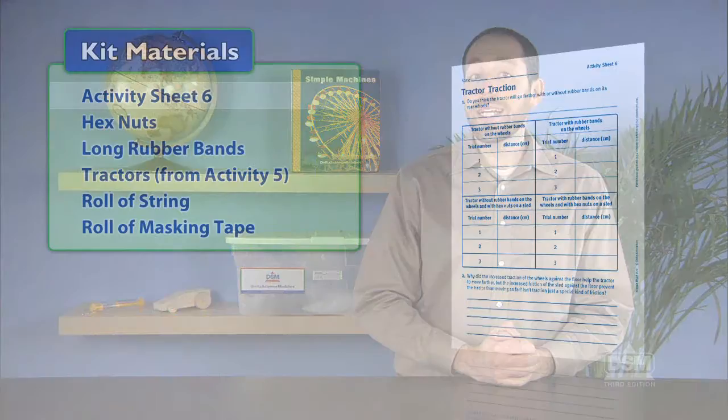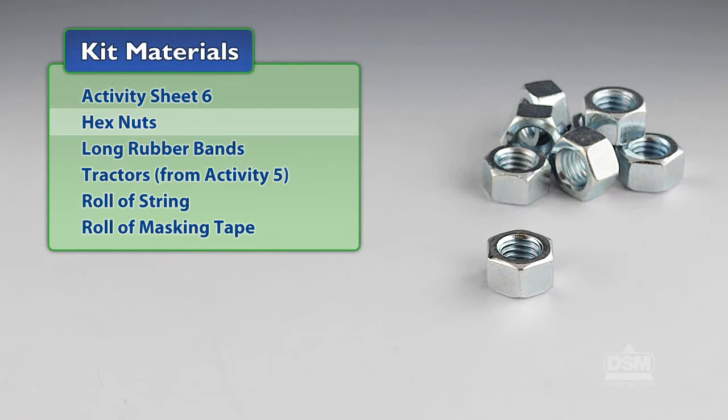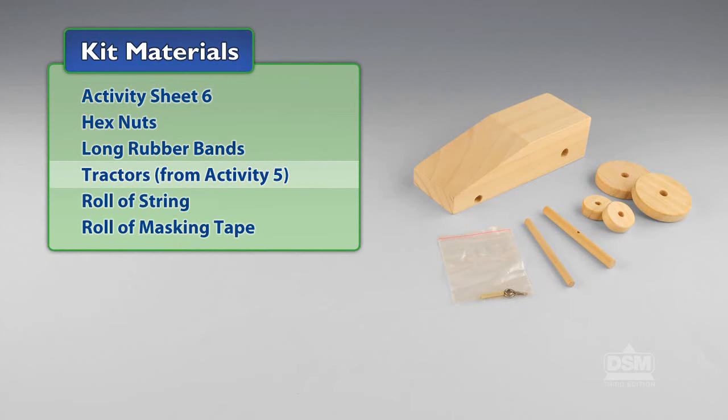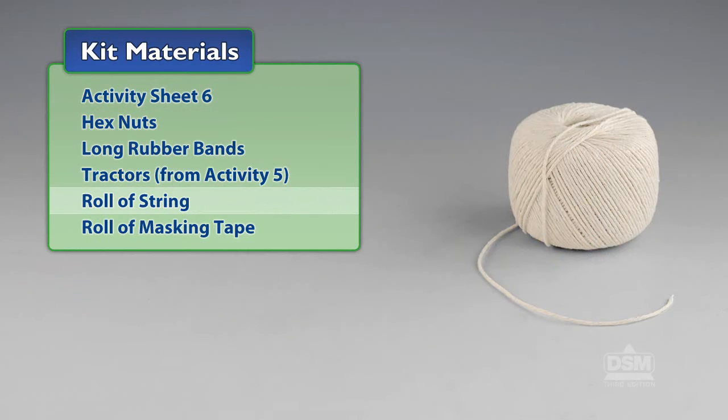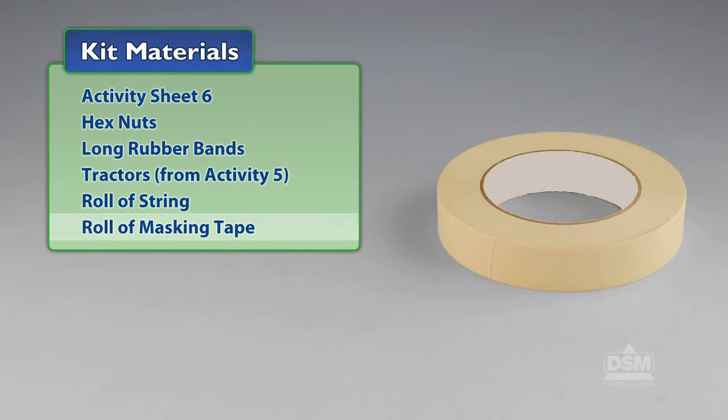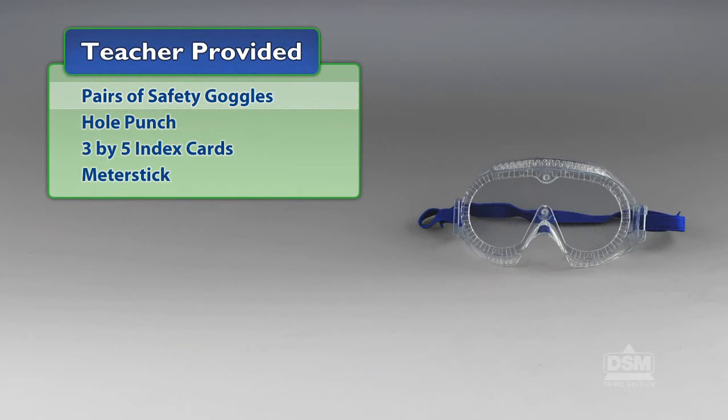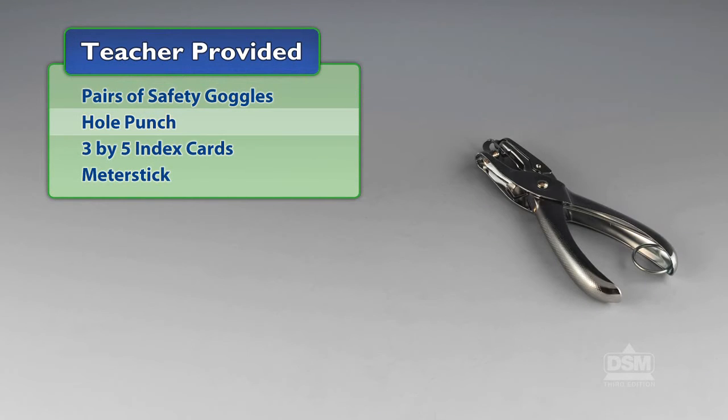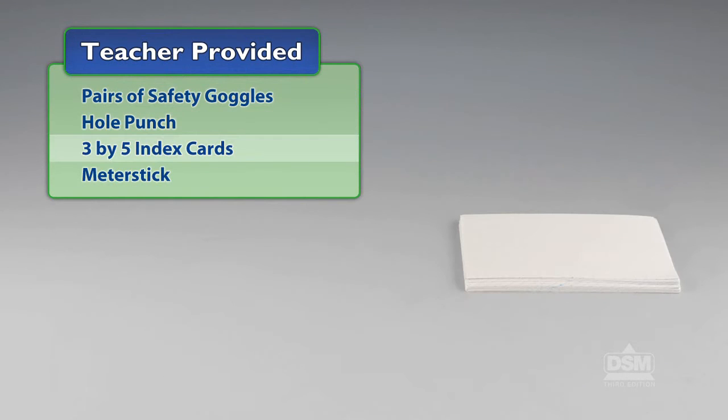You will need the following materials from the kit: Activity Sheet Six, hex nuts, long rubber bands, tractors from Activity Five, roll of string, and a roll of masking tape. You will also need to provide pairs of safety goggles, hole punch, 3x5 index cards, and a meter stick.